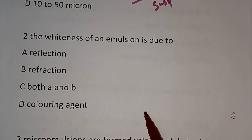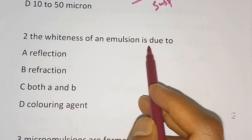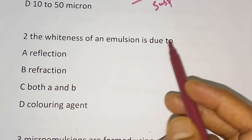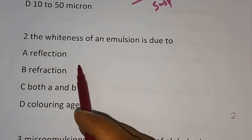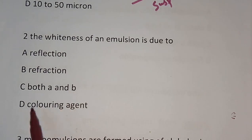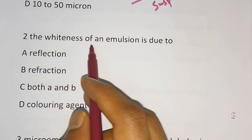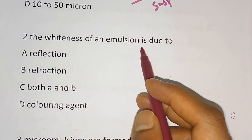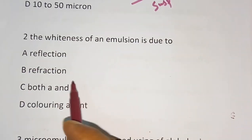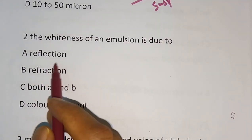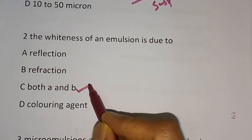Question number 2: The whiteness of the emulsion is due to? Options are reflection, refraction, both A and B, or colouring agent. The correct answer is both A and B — the whiteness of emulsion is due to reflection as well as refraction.